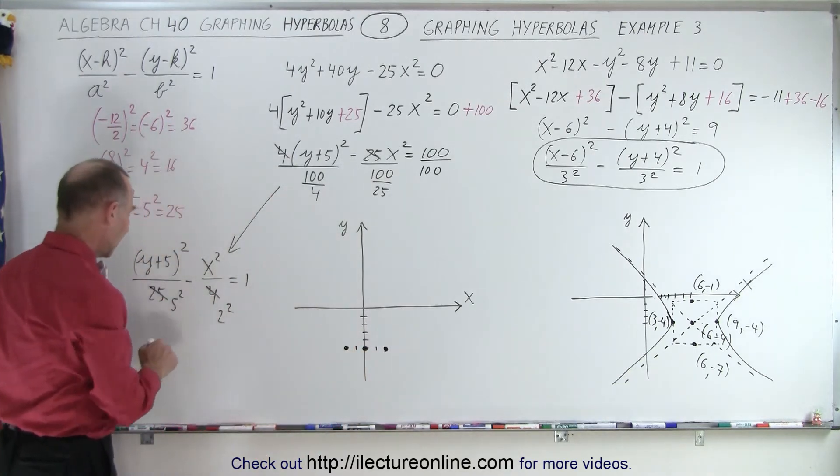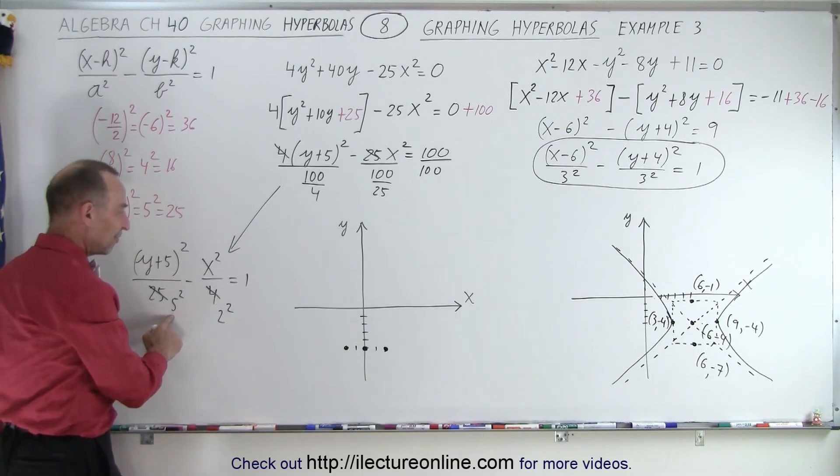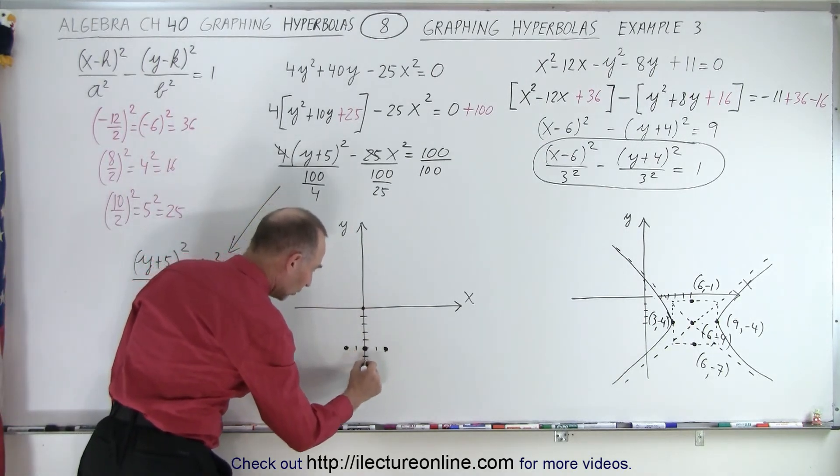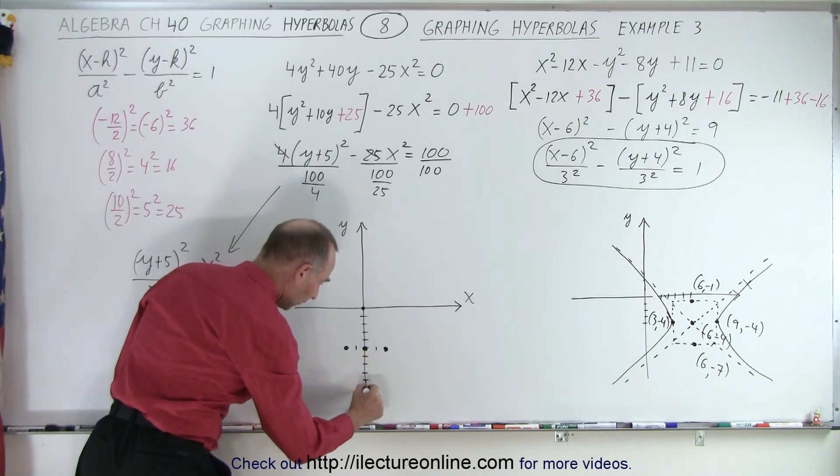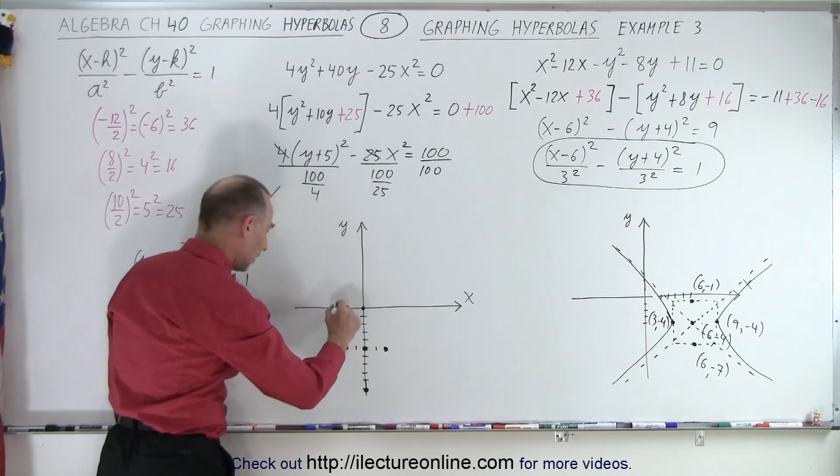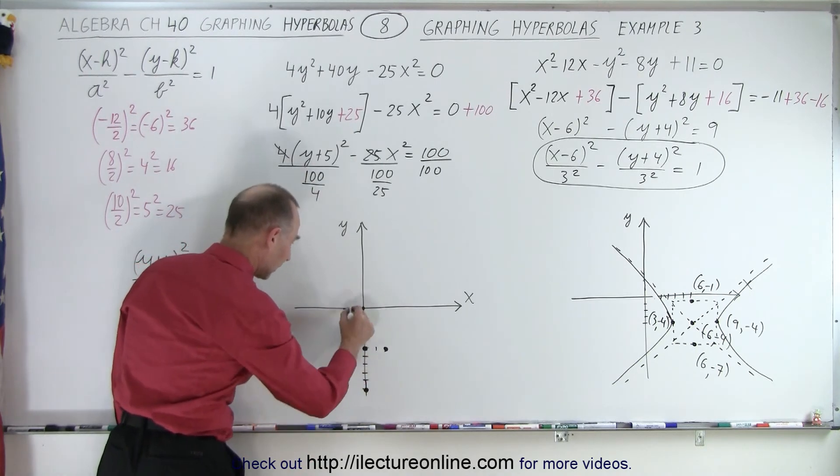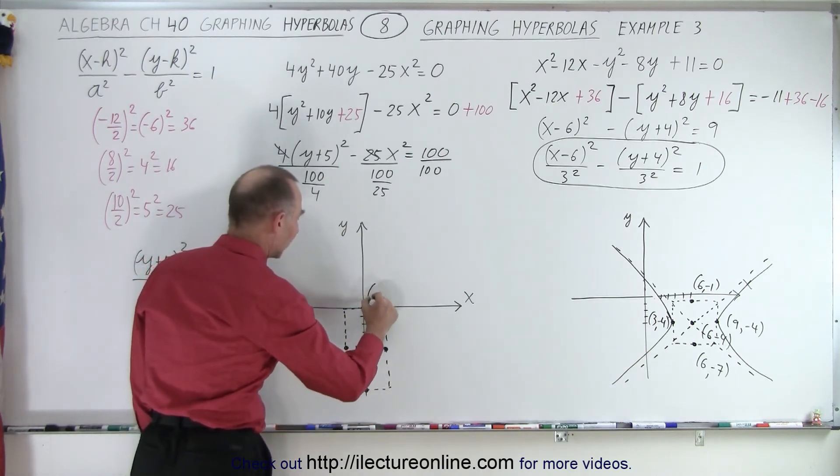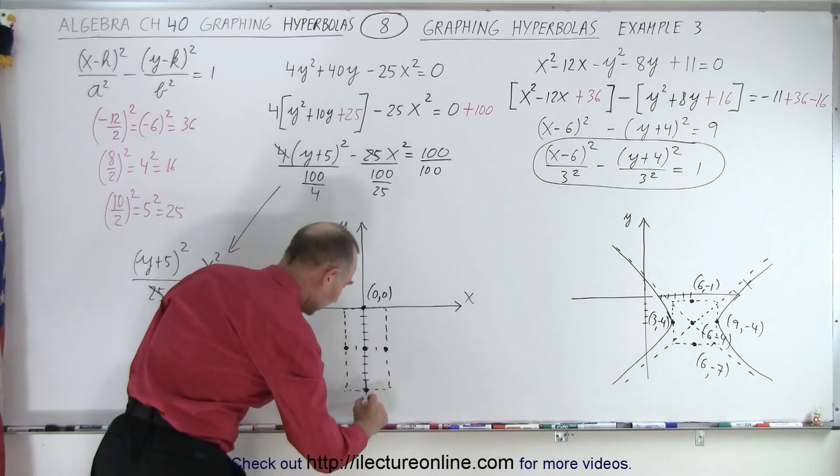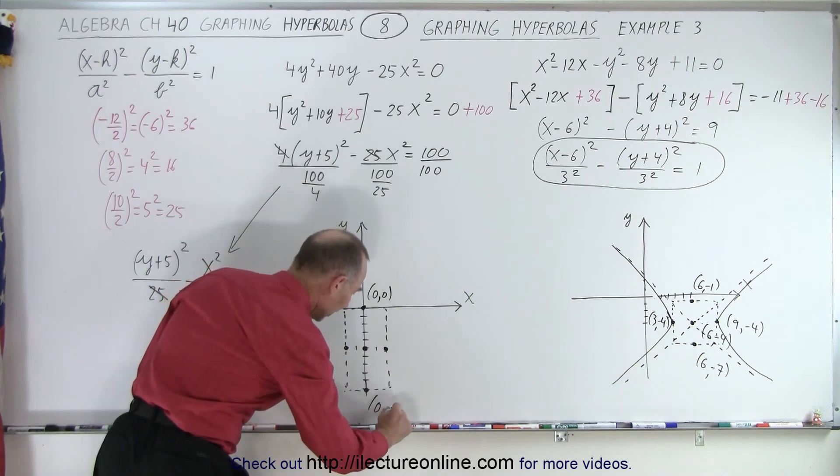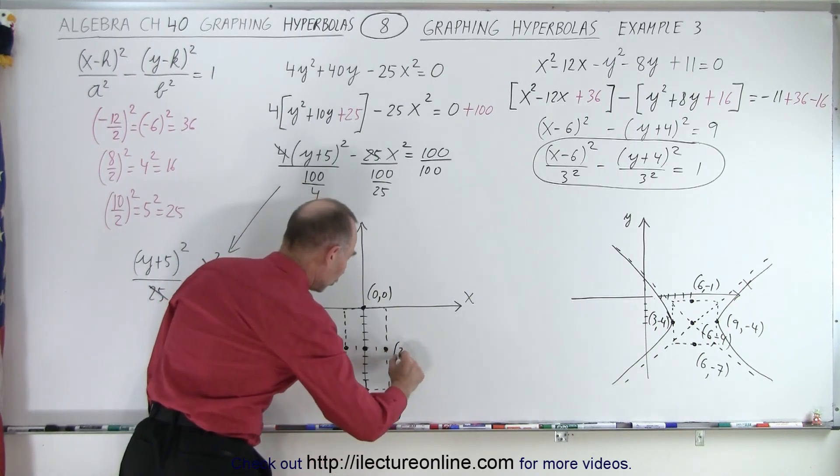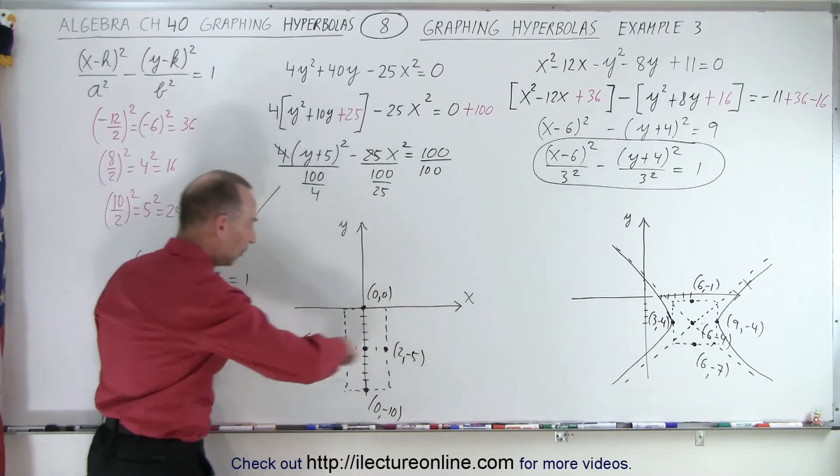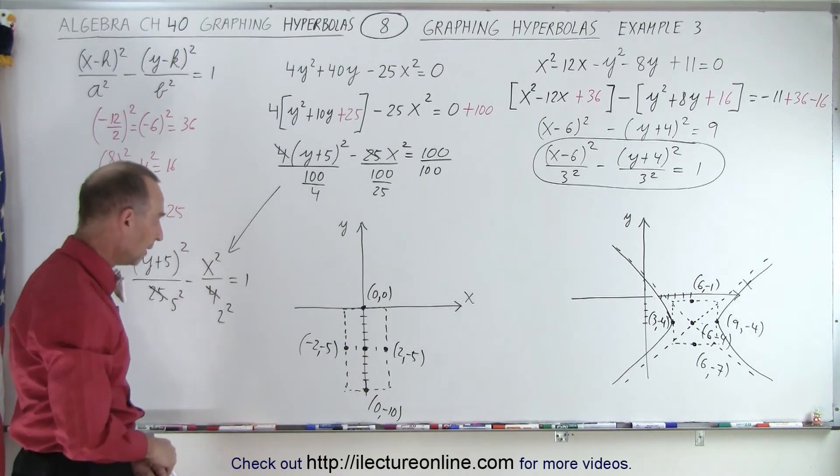Those points are going to be on the box. And we go up and down 5 units. And now we have ourselves a nice box. If you want to know where these points are, this point right here is at 0, 0. This point right here is at 0, negative 10. The point right there is at 2, negative 5. And the point over here is negative 2, negative 5. Those are the 4 points determining the size of the box.